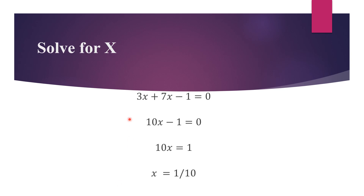The result of the cross-multiplication is 3X plus 7X minus 1. We bring the minus 1 over the equal sign to become plus 1, and add 3X plus 7X to get 10X. So 10X is equal to 1. To find X, we divide both sides by 10: 10X divided by 10 gives X, and 1 divided by 10 gives 1 over 10. So the answer is X equals 1 tenth. Very simple.